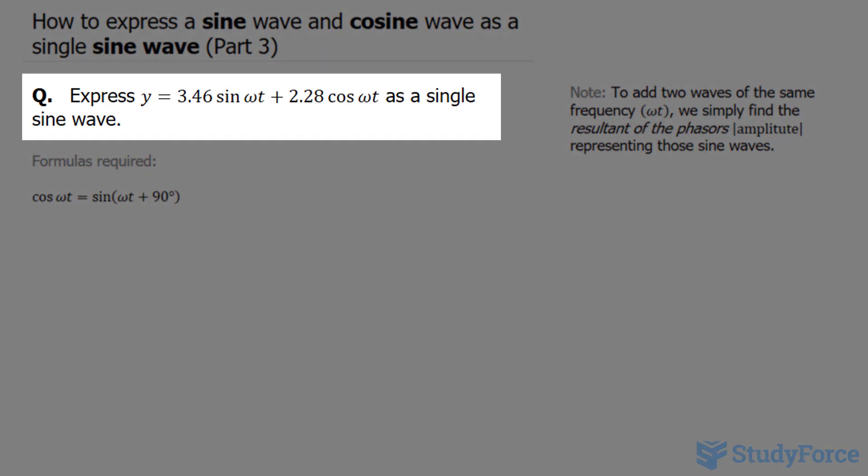The question reads: express y equals 3.46 sine omega t plus 2.28 cosine omega t as a single sine wave.